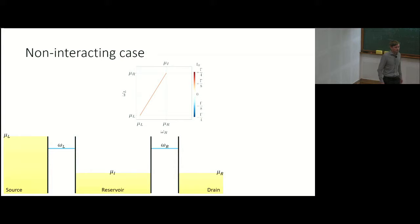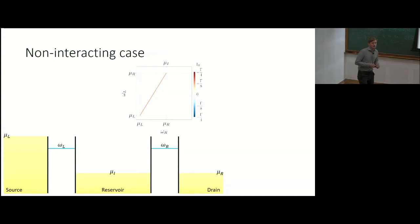In units where e and h-bar are equal to one, this is E gamma divided by h-bar.